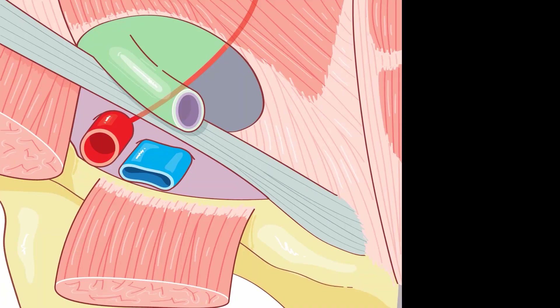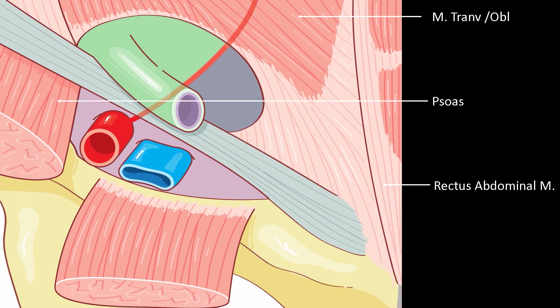The musculopectineal orifice is a zone of abdominal parietal weakness. It is a zone of weakness because at this place there is a passage for the femoral vessels and for the spermatic cord and the round ligament. It is limited at the top by the union of the transversus and internal oblique muscles, internally by the rectus muscle of the abdomen, outside by the psoas, and downwards by the pectinous muscle.